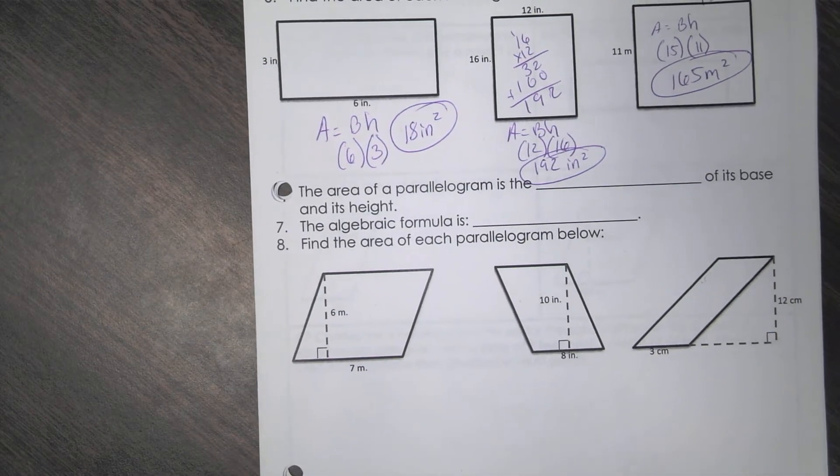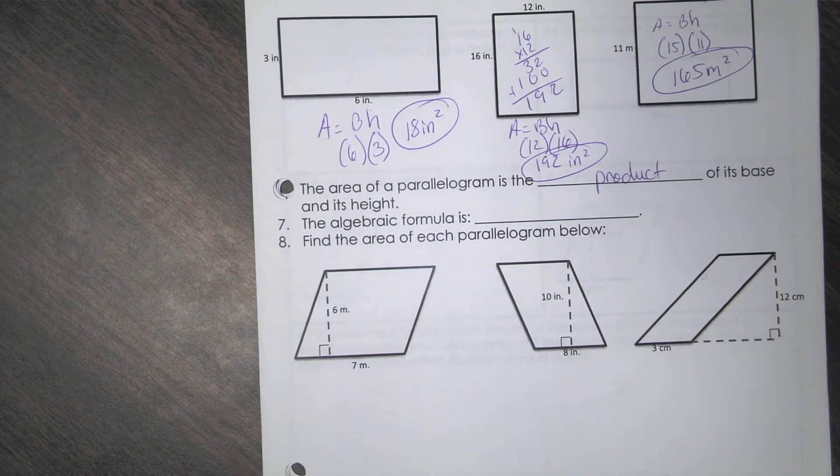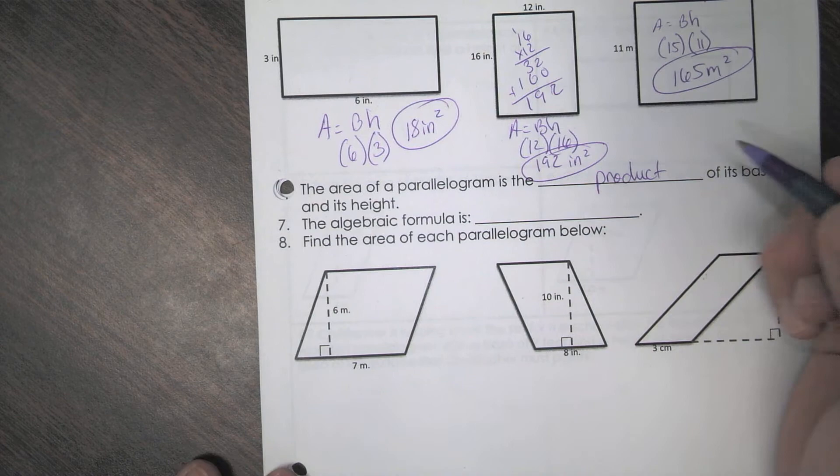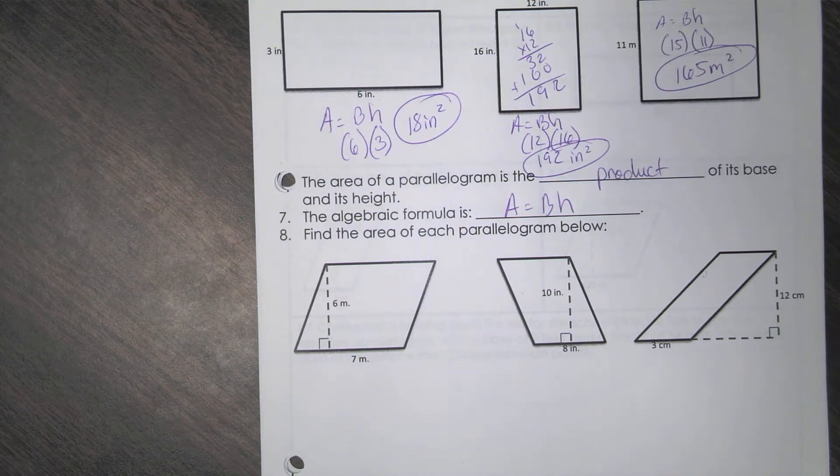Now we're going to talk about parallelograms down here at the bottom. So the area of a parallelogram is the blank of its base and height. So what do you think that is? The area of a parallelogram is the blank. What do you think you're doing? Multiplying. So what's the answer to a multiplication problem? Product. Product is the answer to a multiplication problem. So the algebraic formula is A equals base times height. It's the same thing. Because these are both quadrilaterals. What that means is they both have four sides.